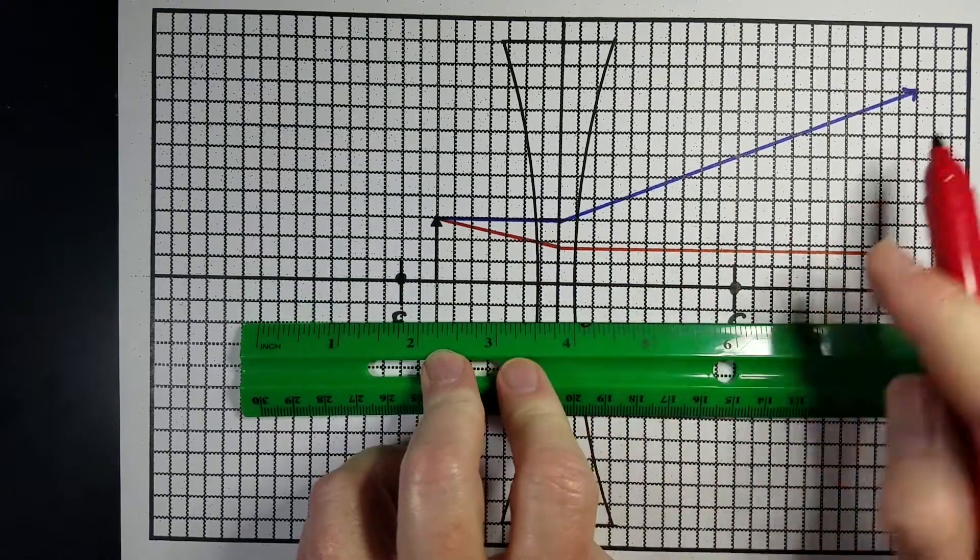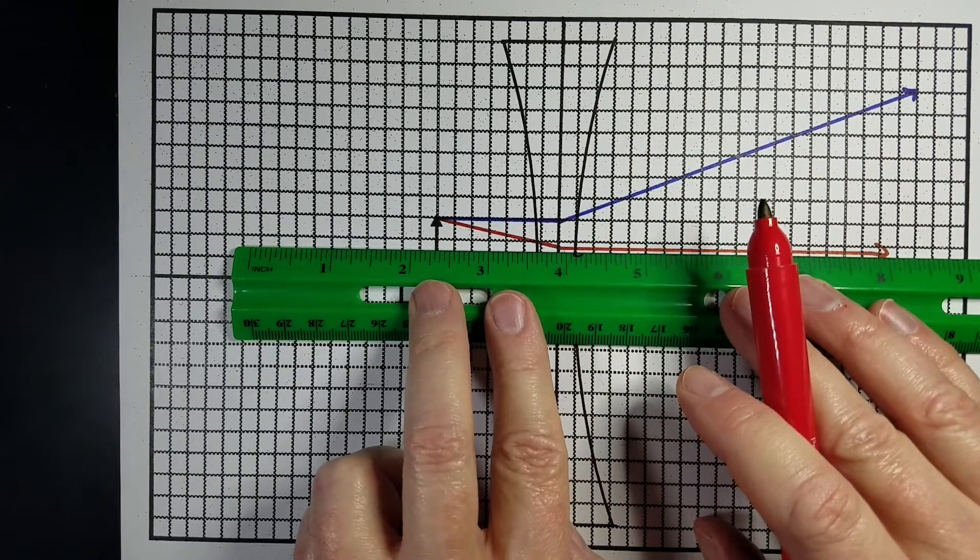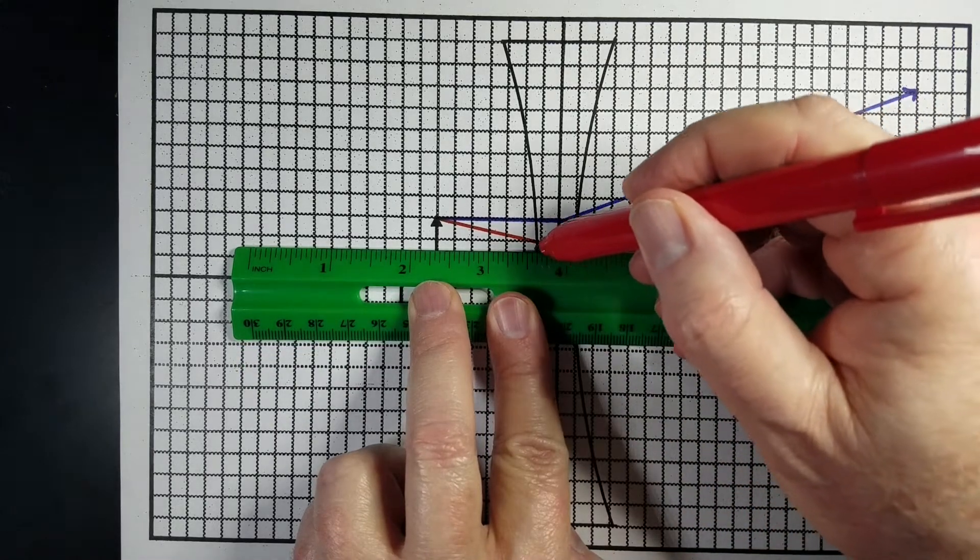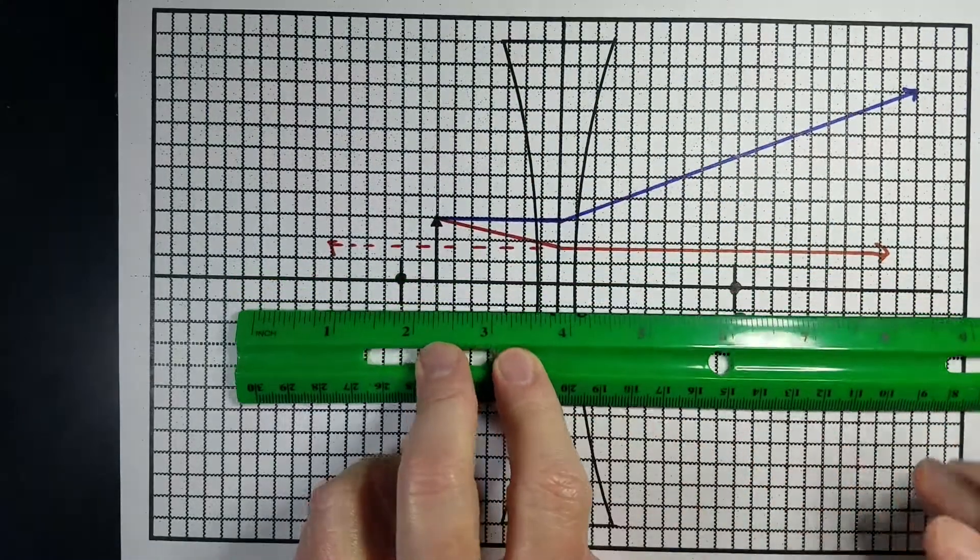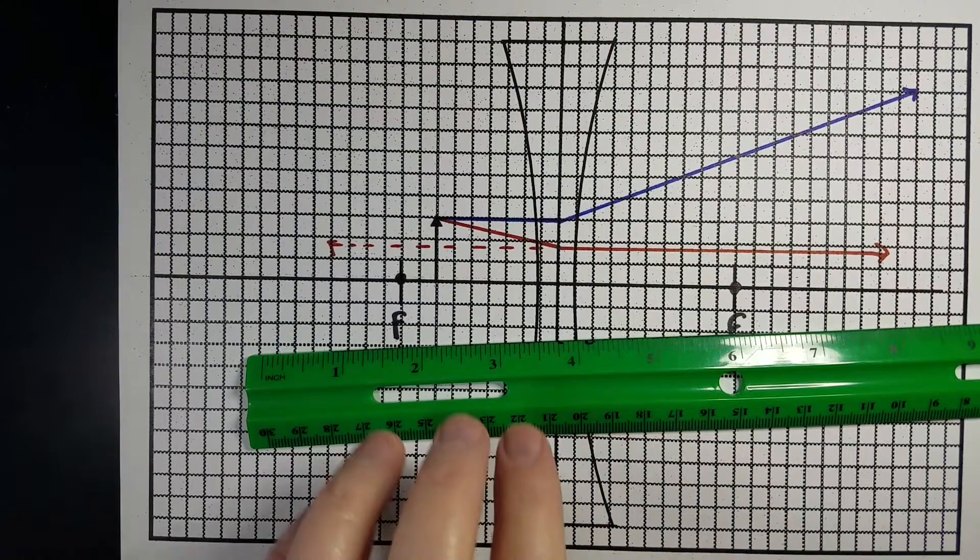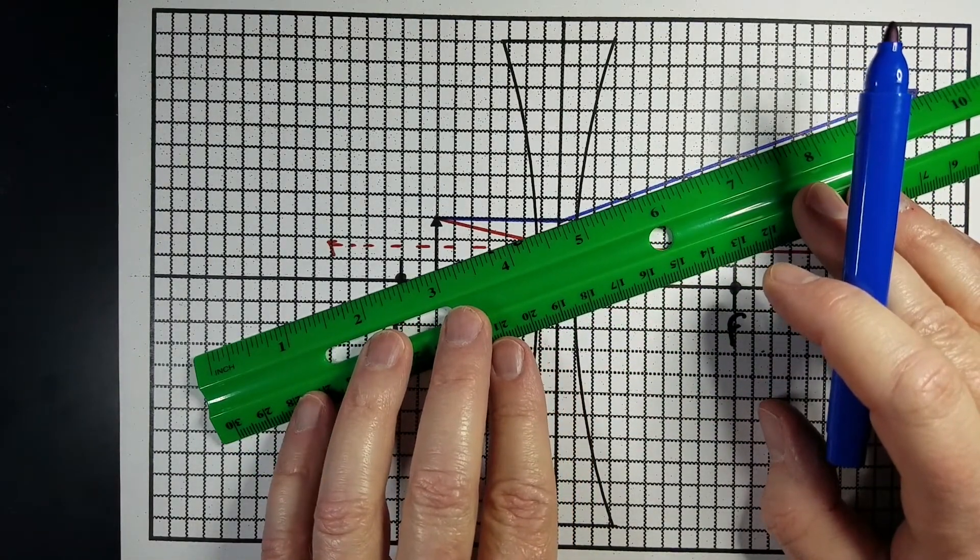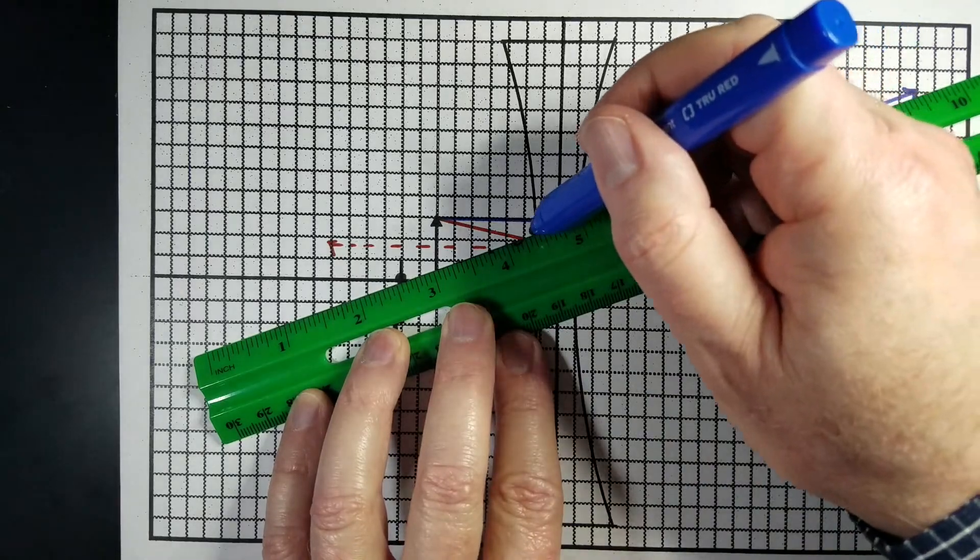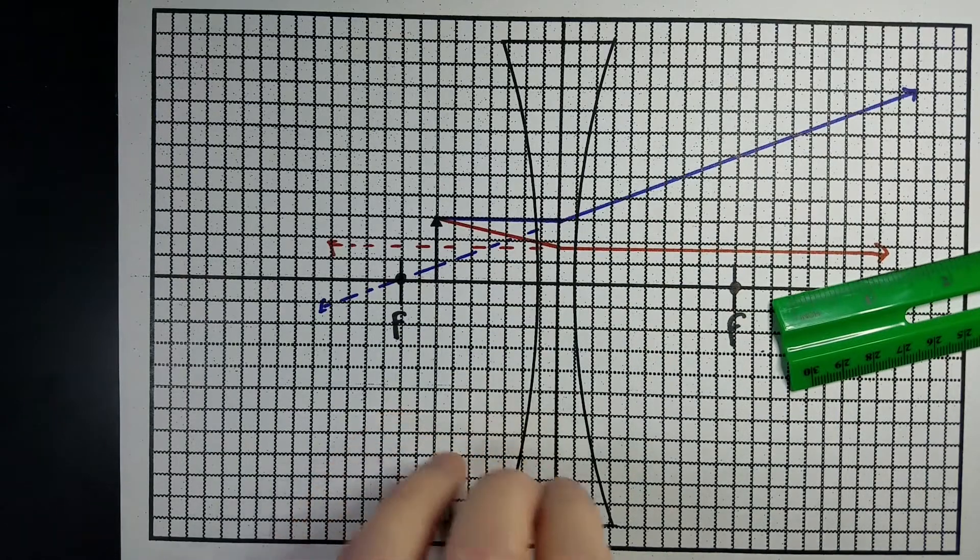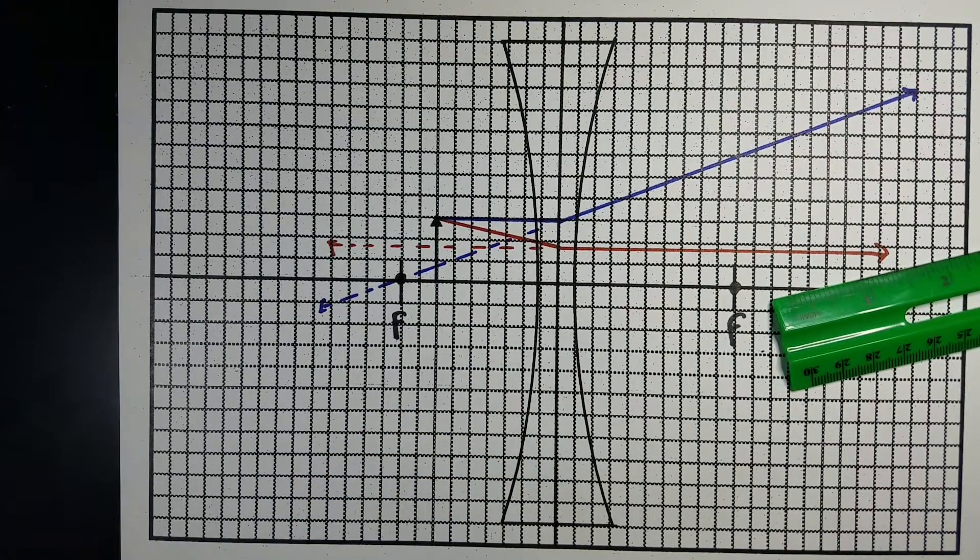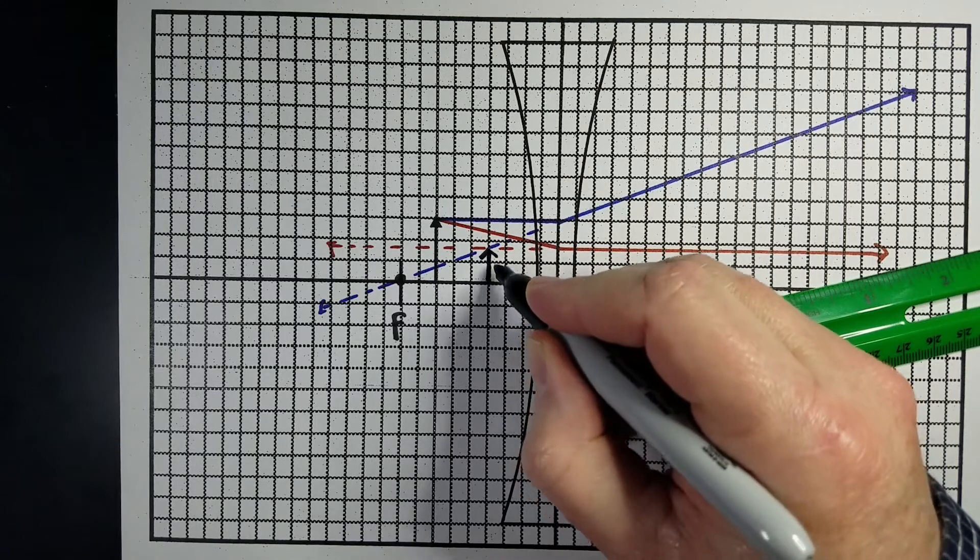So, again, these rays do not cross on this side, so that means they've got to cross on the other side. So I'm going to go ahead and trace this ray back with our virtual light. Trace the other one back as well. And where the two virtual rays cross, that's where the image should be, right there. I should have made that dotted.